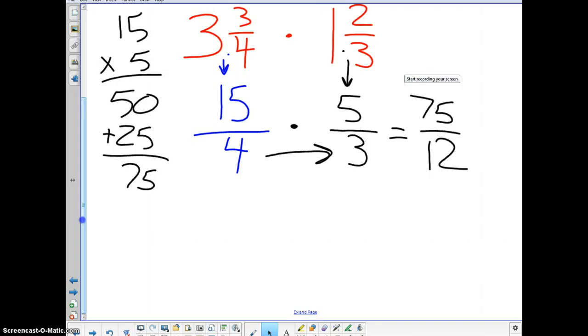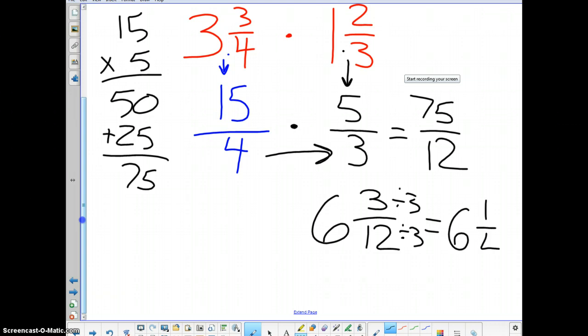Let's see. Twelve can go into seventy-five how many times? Well, four times twelve would be forty-eight. Five times twelve would be sixty. Six times twelve would be seventy-two. So we can go in there six times total. We have three of those twelfths left. We can also simplify three twelfths down to, let's divide this by three, divide that by three. And we will get six and one-fourth.